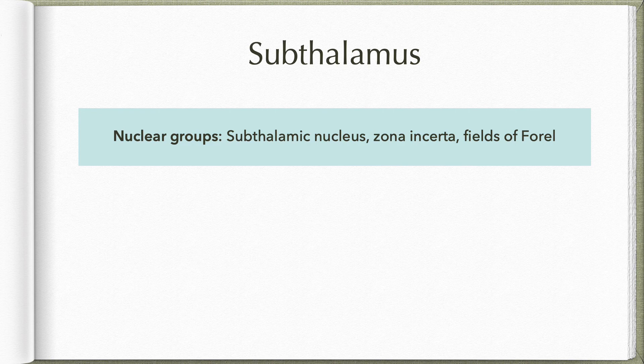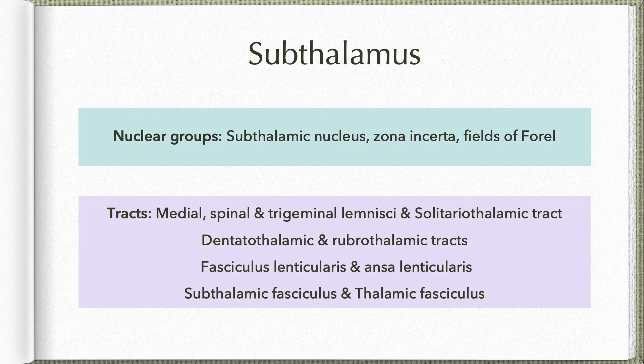The white matter includes various tracts which are of two types. One type includes tracts which have begun in a distal part of the central nervous system and are on their way to reach the ventral aspect of the thalamus. Because the subthalamus is immediately beneath the ventral tier nuclei of the thalamus, all fiber bundles meant to reach those nuclei will pass through the subthalamus region to reach their destination.